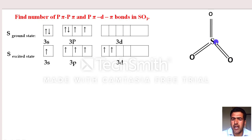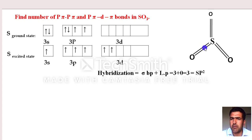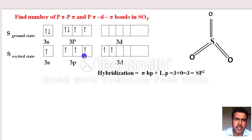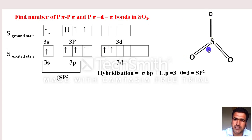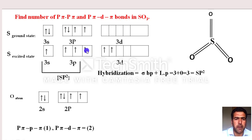Step 2 for SO₃: hybridization = sigma bonds + lone pairs = 3 + 0 = 3, meaning SP2 hybridization again. SP2 uses s×1 and p×2 — ignore these. Remaining unhybridized orbitals: 1 p orbital and 2 d orbitals. The p orbital forms a bond with oxygen's p → 1 pπ-pπ bond. The 2 d orbitals each form a bond with oxygen's p → 2 pπ-dπ bonds. So in SO₃: pπ-pπ = 1 and pπ-dπ = 2.